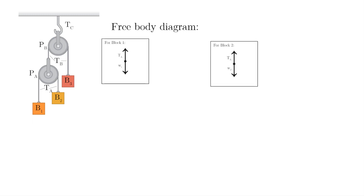For the FBD of block 1 and 2, we have the same pulley, which is pulley A. Therefore, we have the same tension. For block 1, ΣFx is equal to 0, while ΣFy is equal to tension A minus weight 1. For block 2, ΣFx is equal to 0, and ΣFy is equal to tension A minus weight 2.